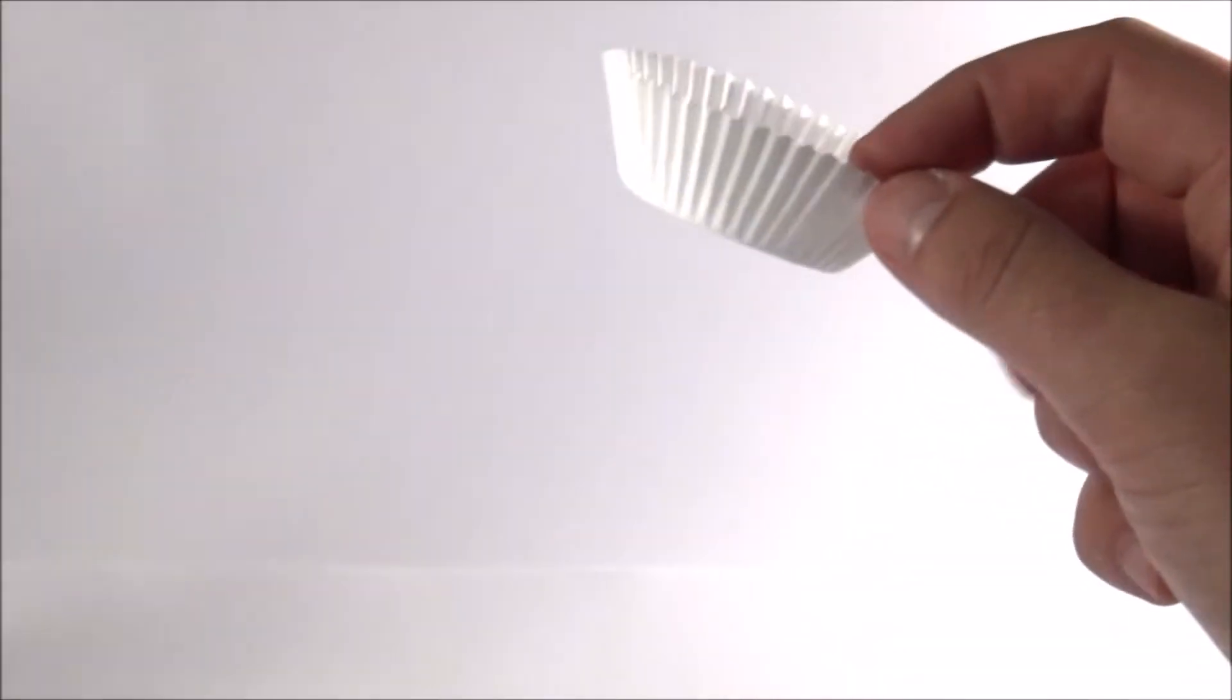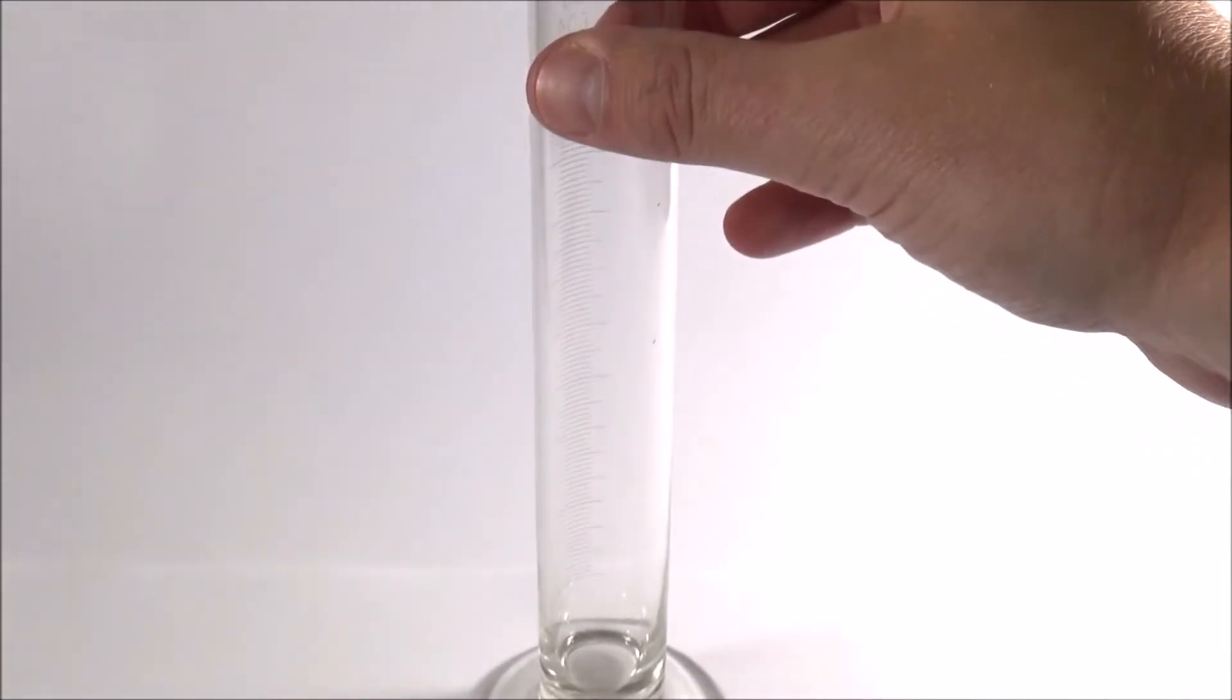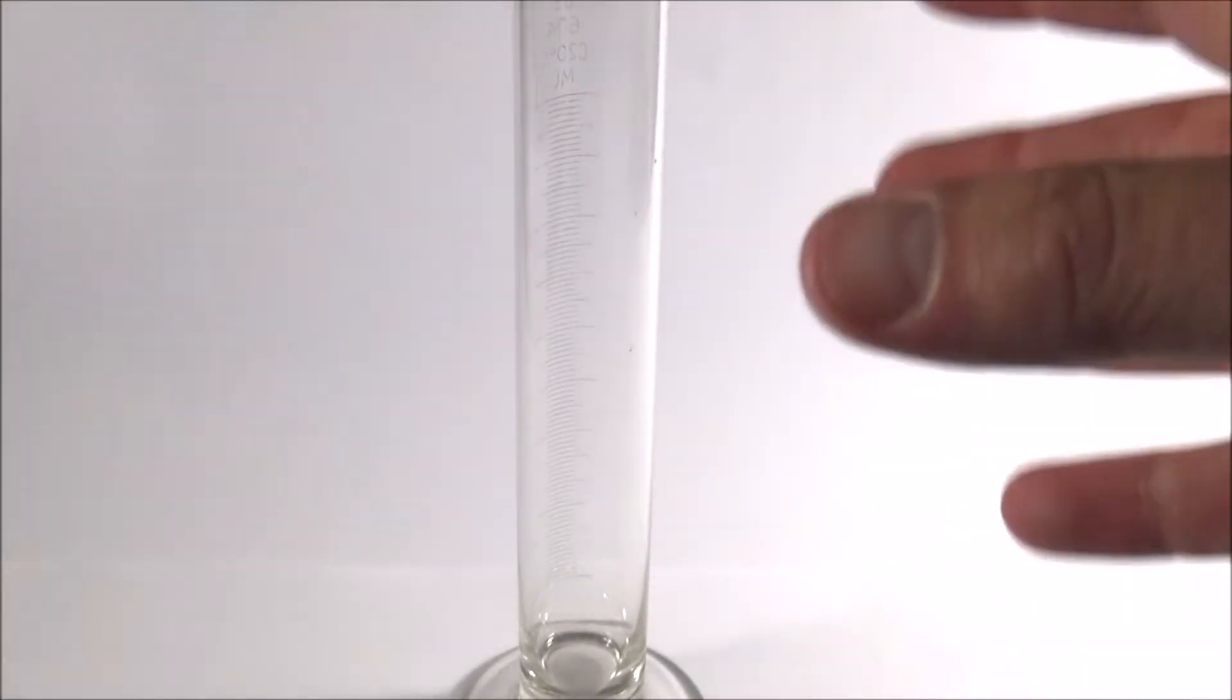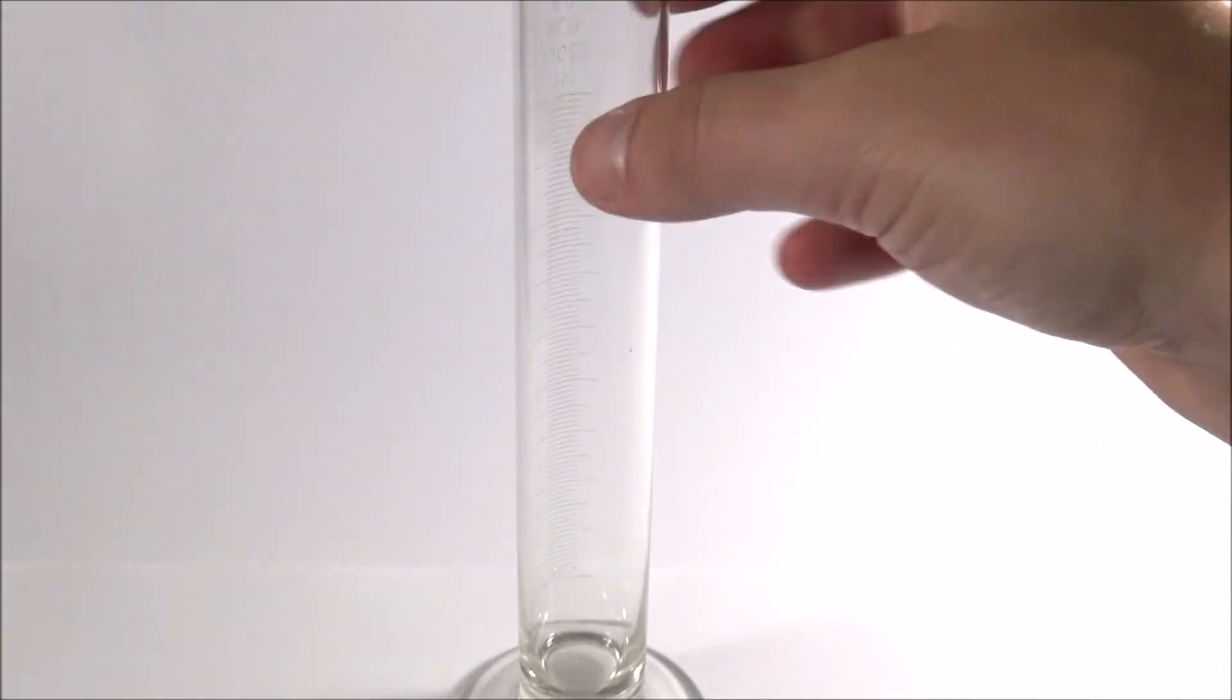But in this video, it's a very similar experiment, but this time we're going to look at an object which is falling through a fluid. Now what I have here is just a glass measuring cylinder, and depending on the setup at your school, you might have different size tubes.